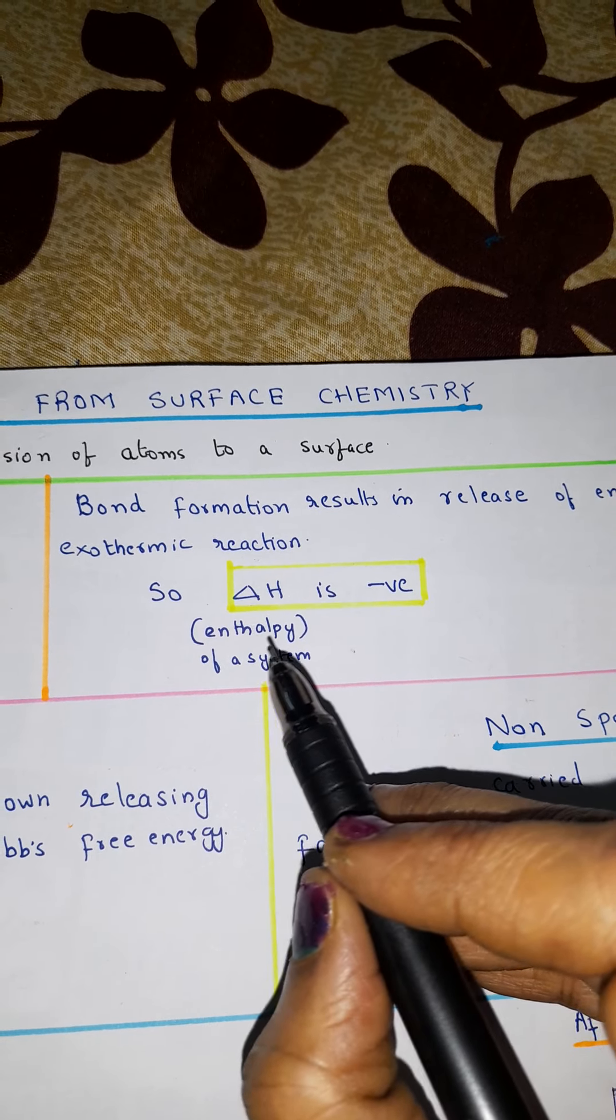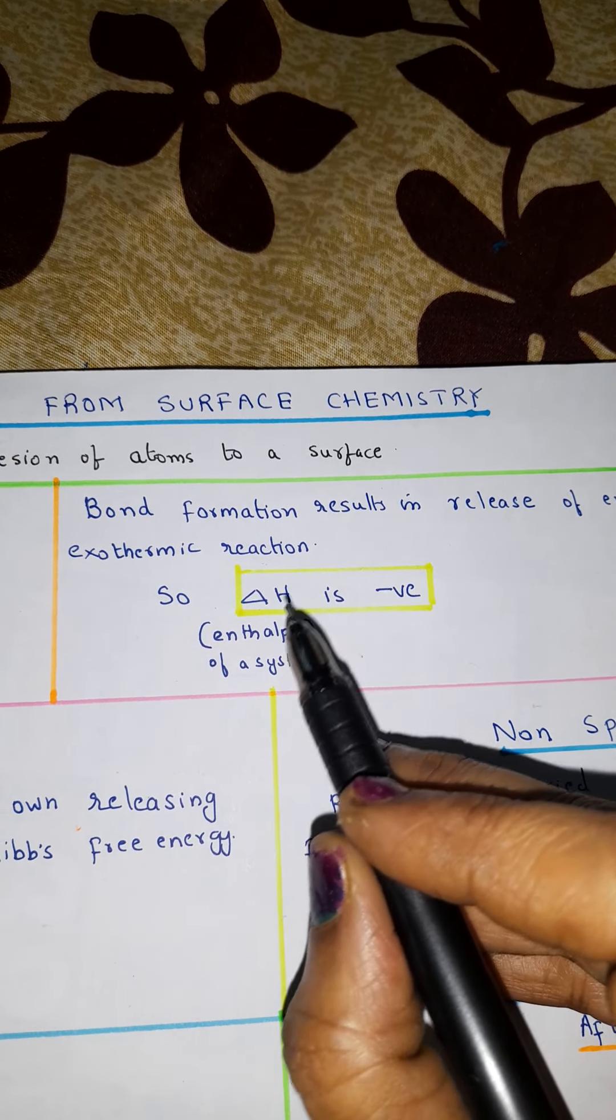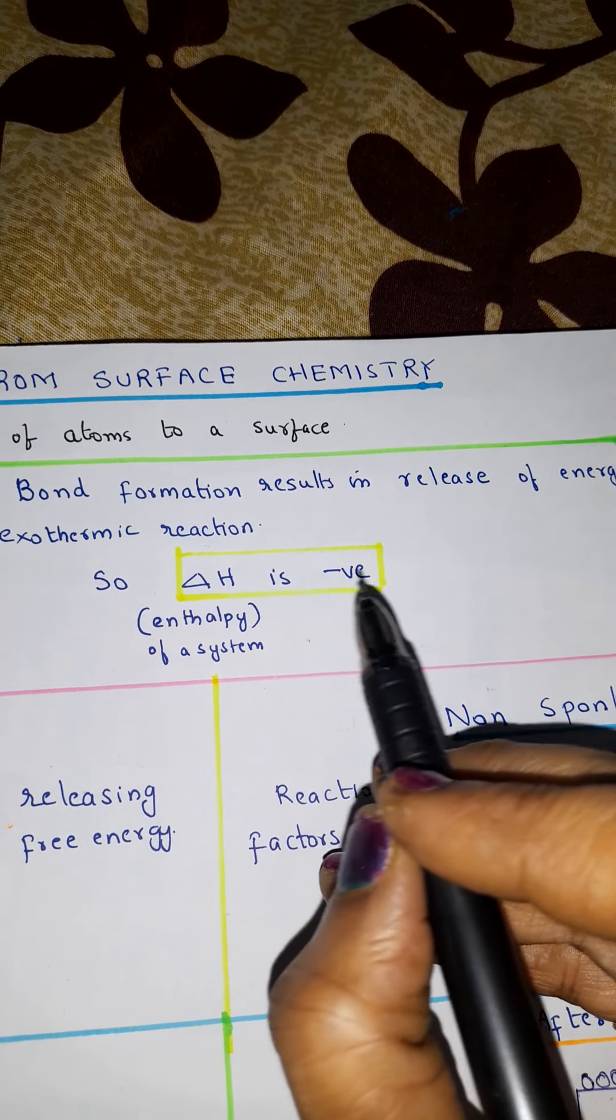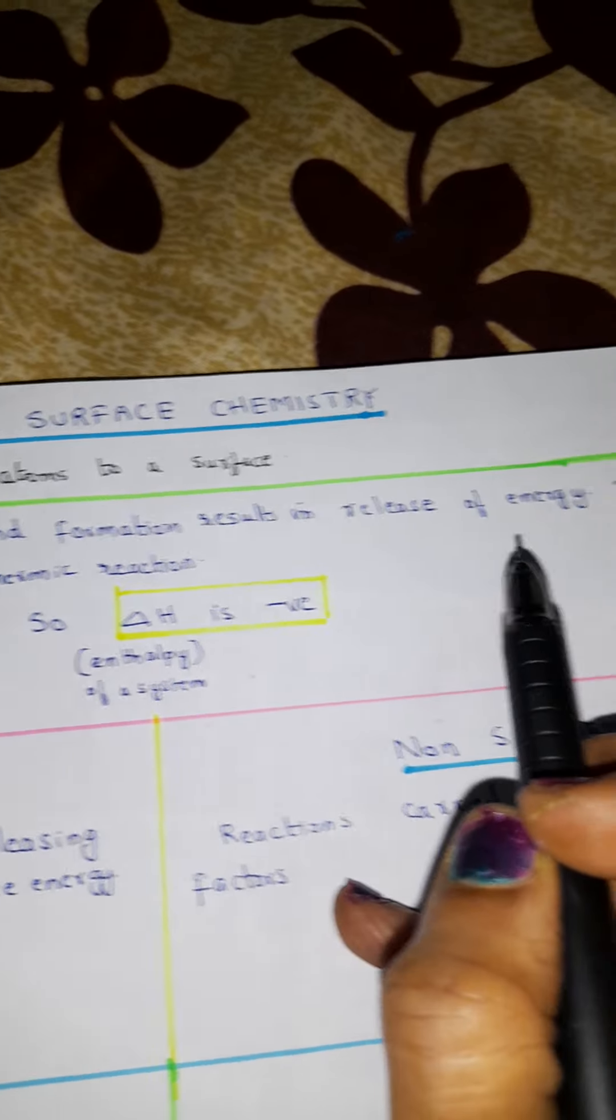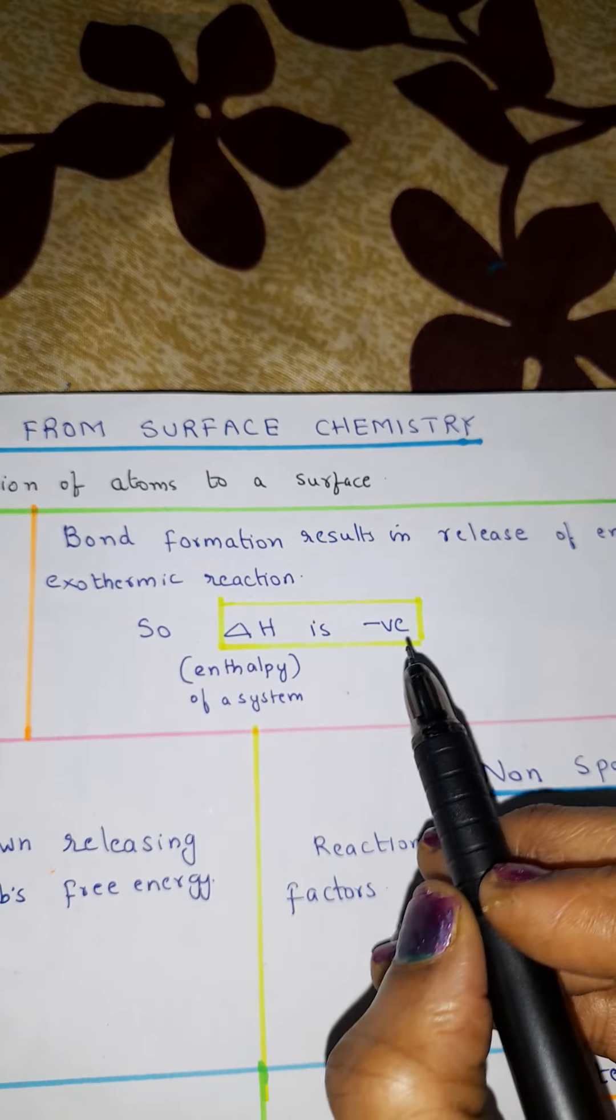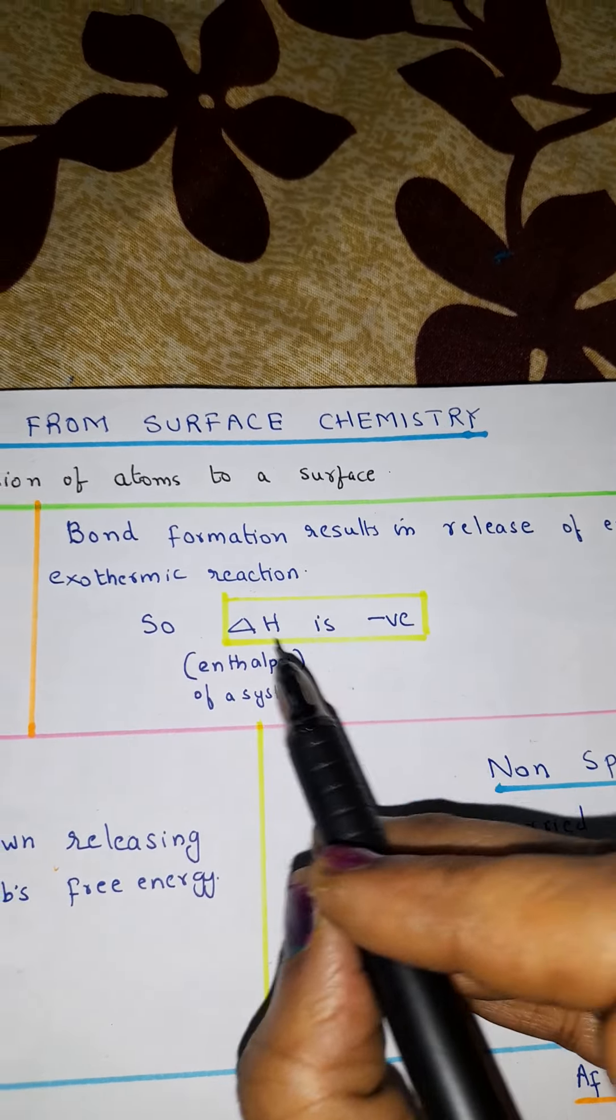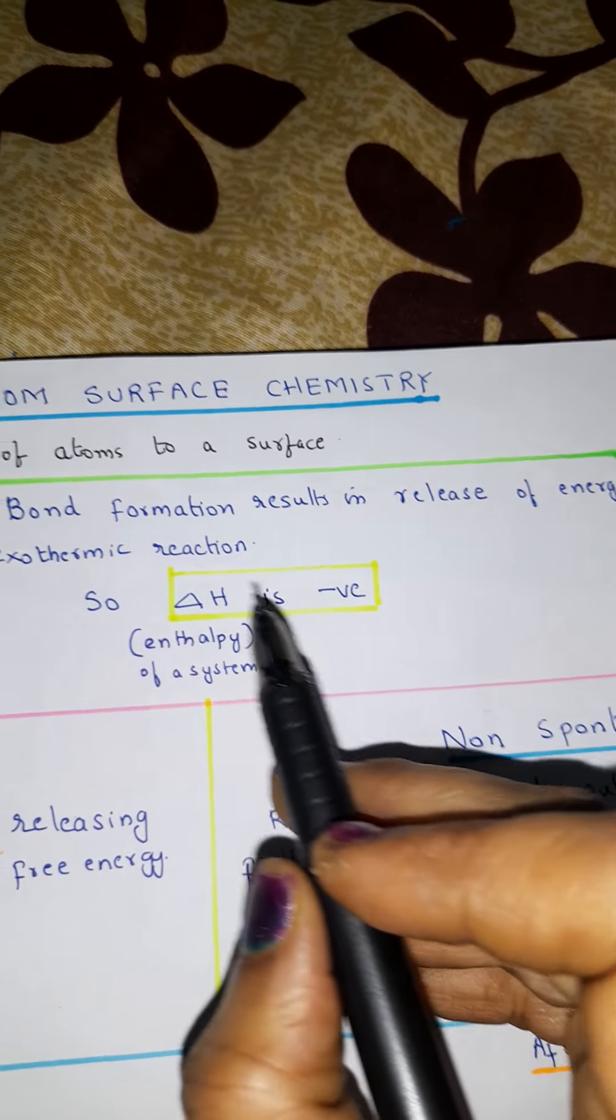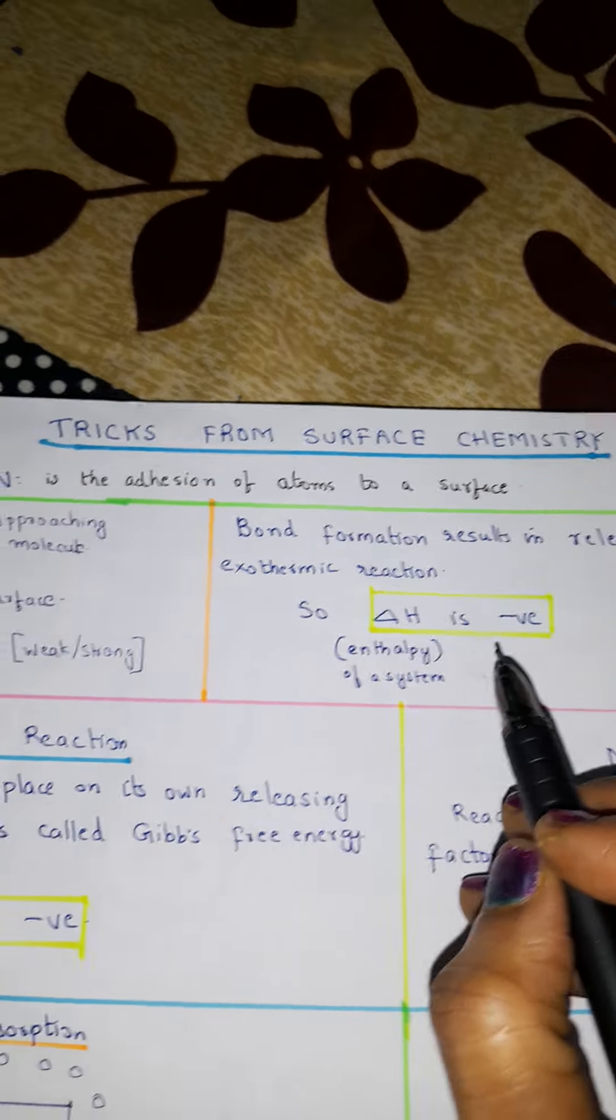So here delta H. What is delta H? Enthalpy. It is the enthalpy of a system. Delta H means enthalpy of a system. So delta H is negative because when energy is given out, delta H will be negative. Remember this point. In the case of adsorption, since it is an exothermic reaction, delta H is negative.